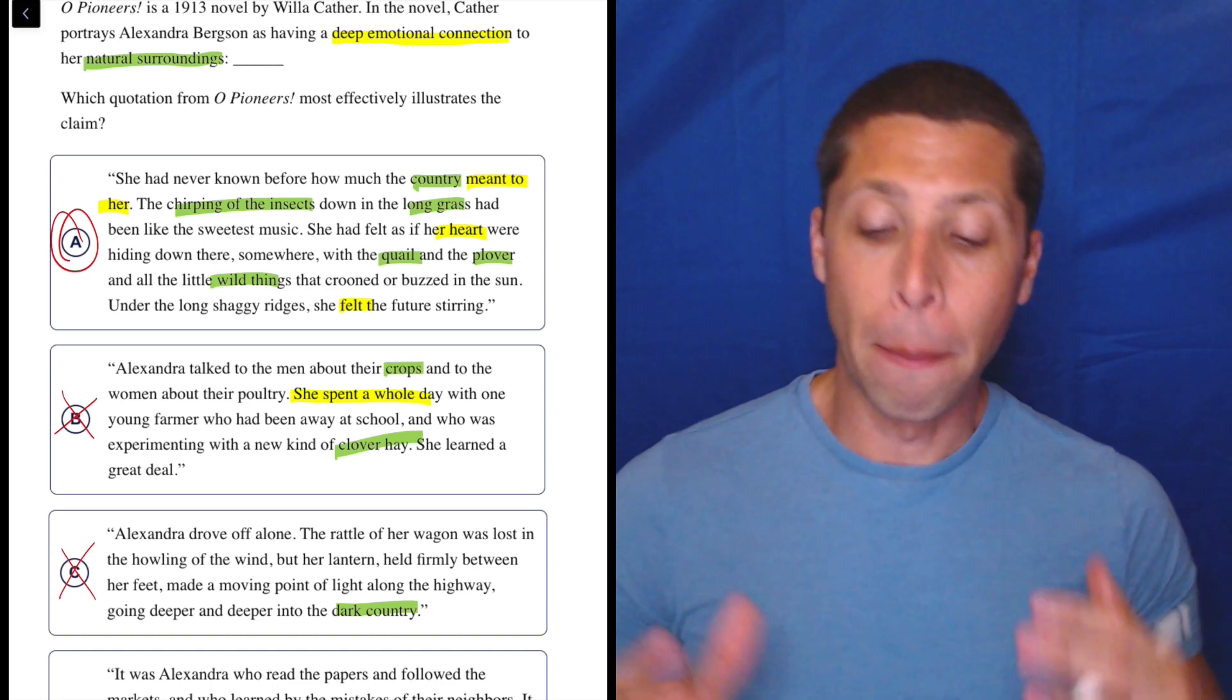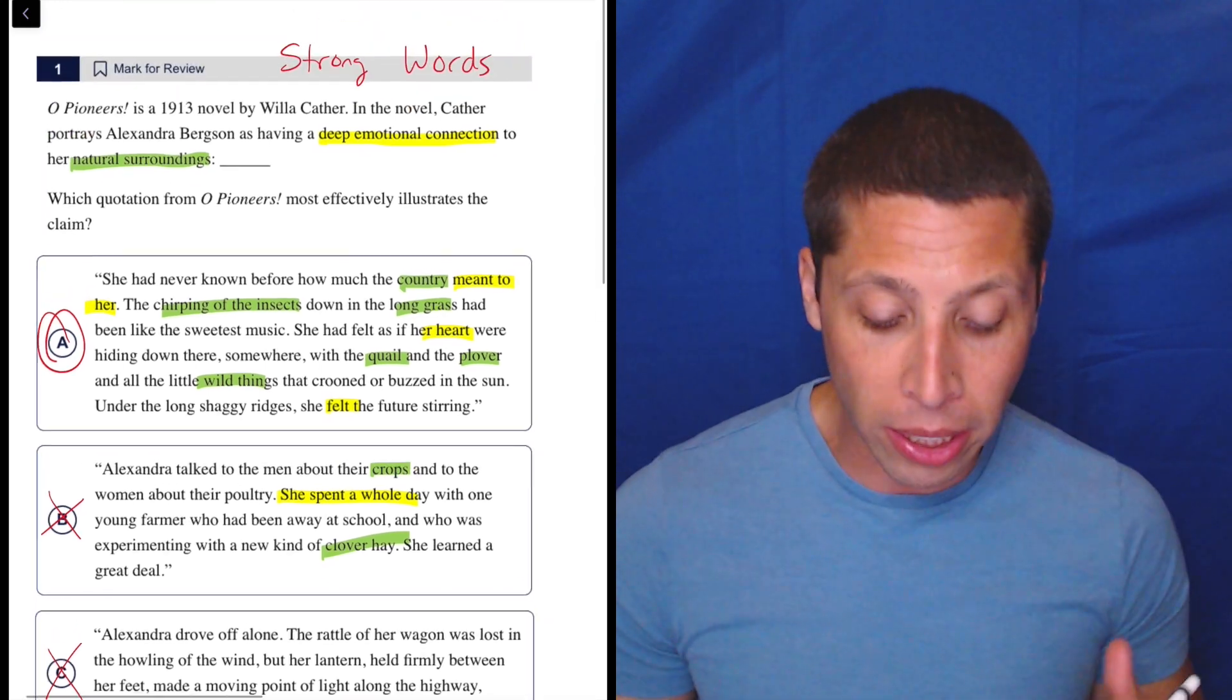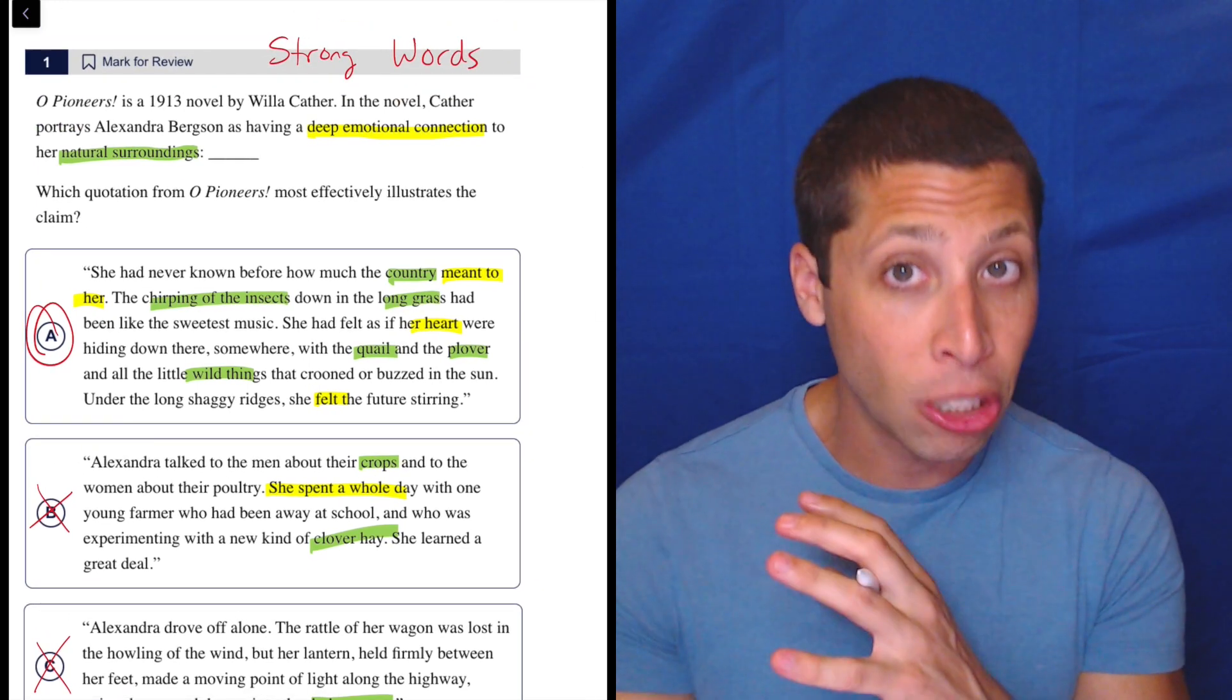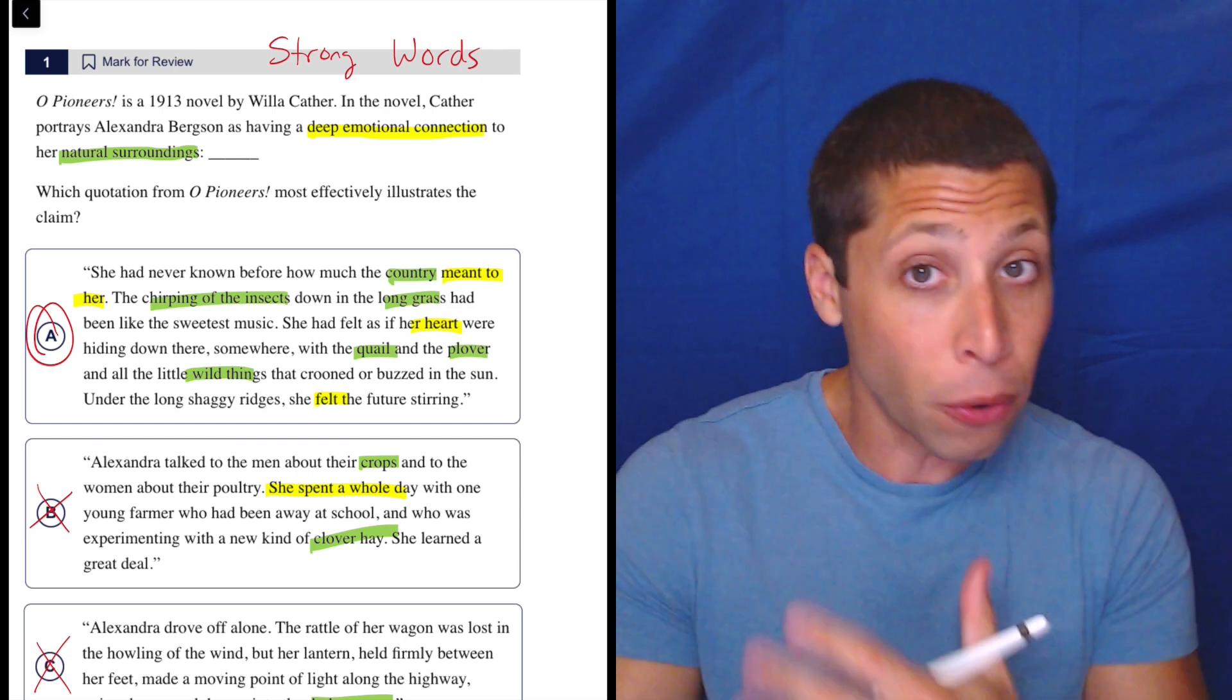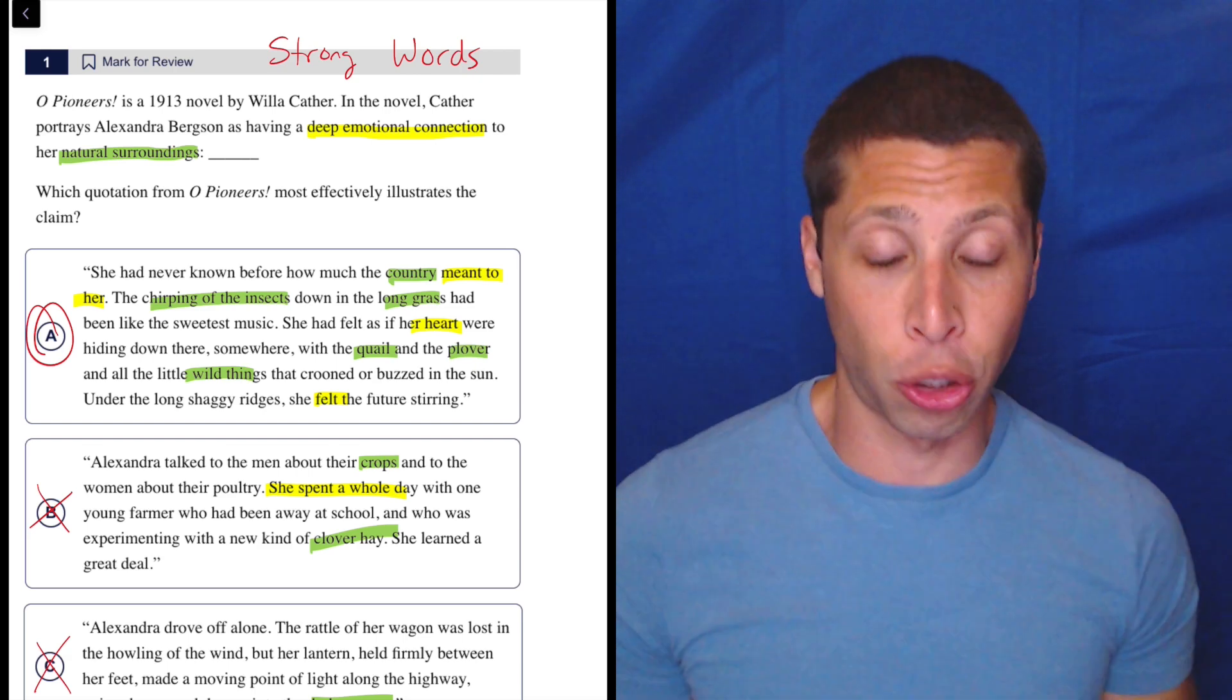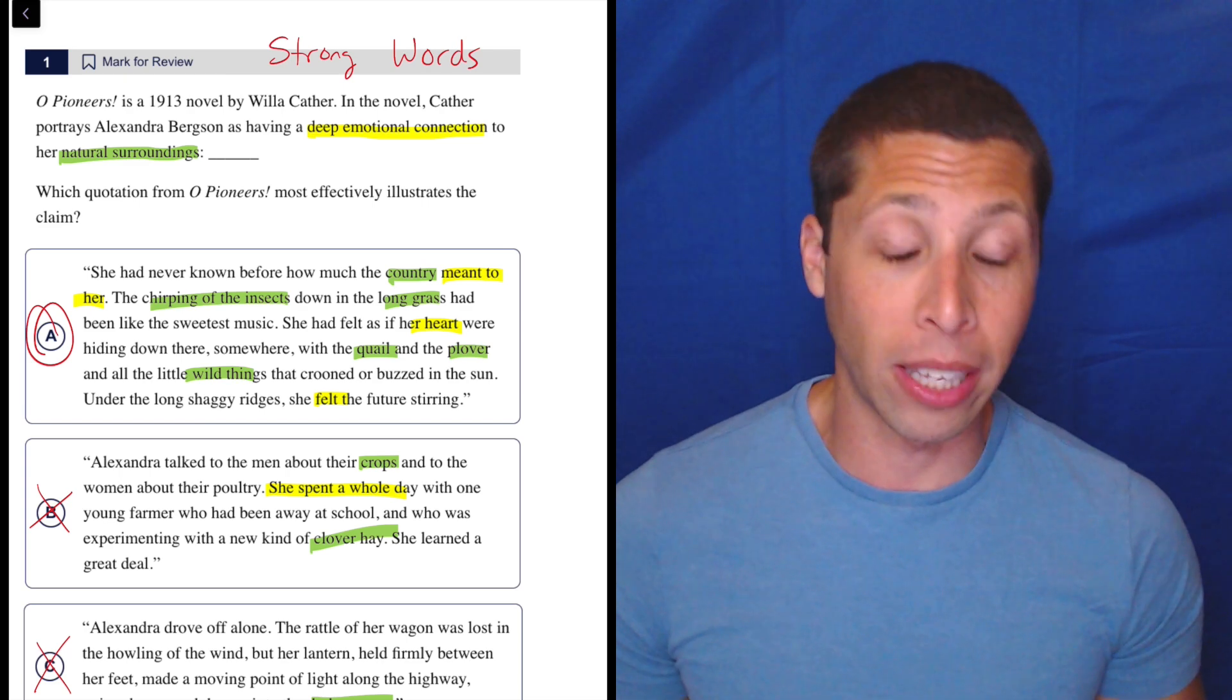This is not a particularly hard question, but it really exemplifies what we're going for with these illustrate the claims. We are really interested in strong words that stand out in that initial passage. And then those same strong words are going to appear as different words, same idea in the choices. And you need to be able to kind of make those connections really intuitively, really quickly as you're reading.